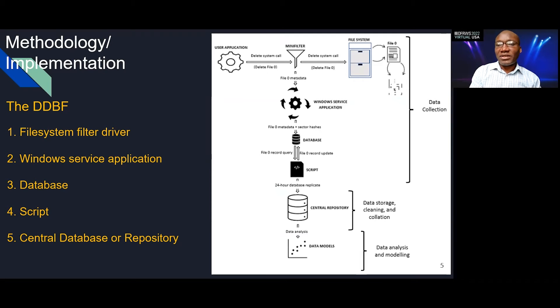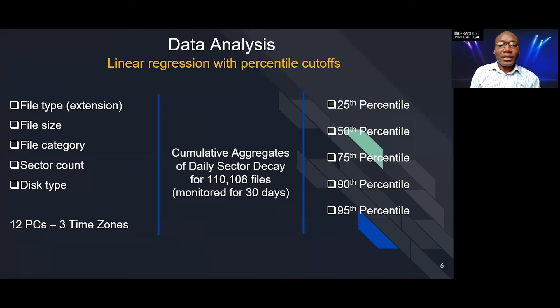In this test that we conducted, we monitored 12 computers, and we monitored over 100,000 files. The information that we collected from the files are the file types using file extensions, the size of the files, the category of the files - either user files, application files, system files, or other types of files - the number of sectors that the file has, as well as the type of disk from which the file was deleted, is it a hard disk drive or a solid state drive. There were 12 computers in this test, and we observed these computers in different time zones.